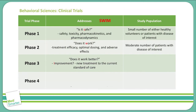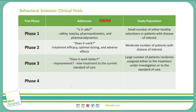Phase three is the I in SWIM: 'Is there an improvement?' This asks whether the new treatment is an improvement over the standard of care. If medication A is the current standard of care and a clinical trial is studying whether a new medication works better, that is what phase three addresses. A large number of patients are randomly assigned to either the new treatment or the standard of care, and results are compared side by side.